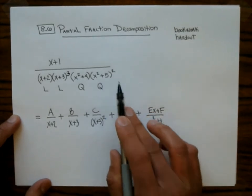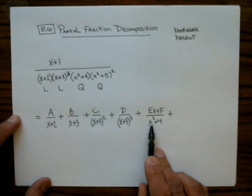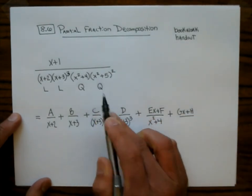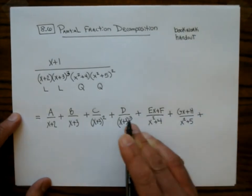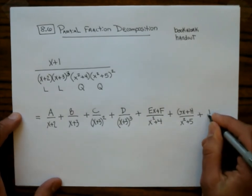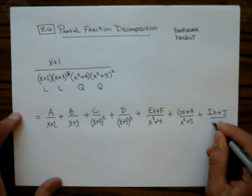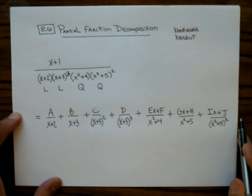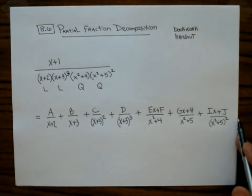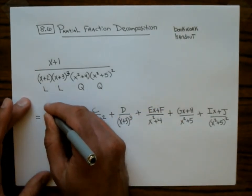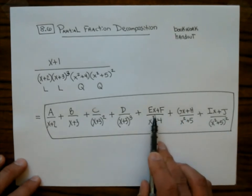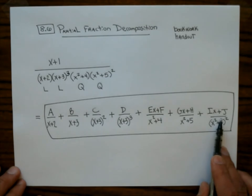Now you have a quadratic factor raised to a power. For that factor we write G·x plus H over the quadratic factor x squared plus 5. But because it has a squared, I have to build up to that. So this is going to be I·x plus J all over x squared plus 5 squared. And you would need to write yet another fraction like K·x plus L over x squared plus 5 cubed if there was a cube there. This is how you do your partial fraction decomposition — this one's so big I would never ask you to solve for those constants, but we're going to do some smaller ones where we solve for the constants.